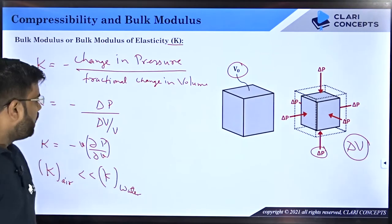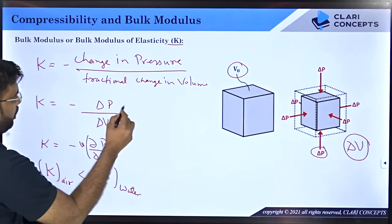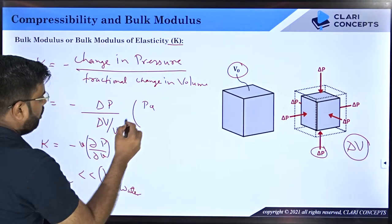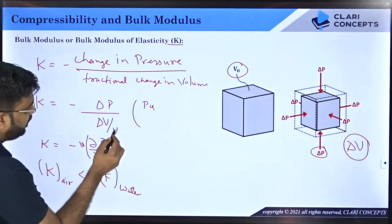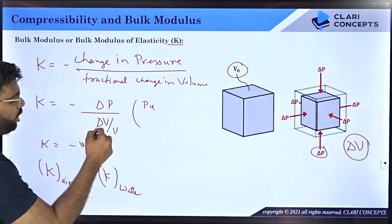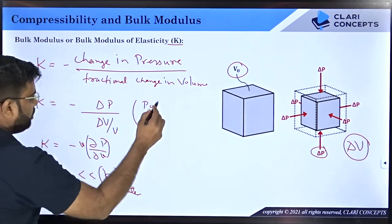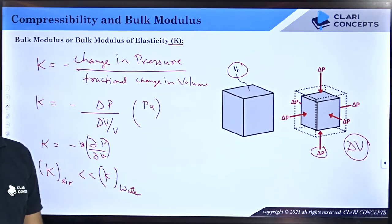If you talk about the units of bulk modulus: the unit of pressure is Pascal, and the unit of volume is meter cube. Since meter cube over meter cube cancels out, the unit of bulk modulus of elasticity is simply Pascal.